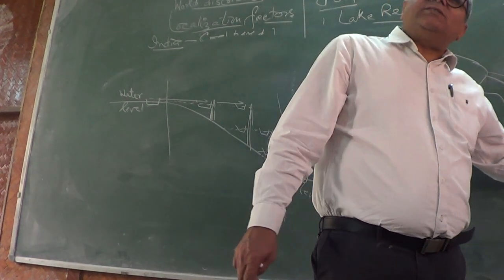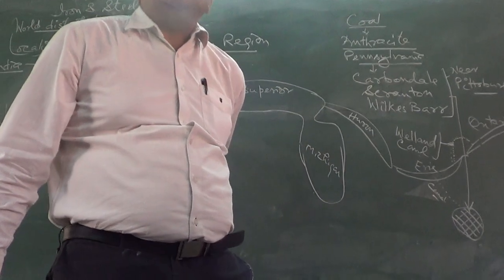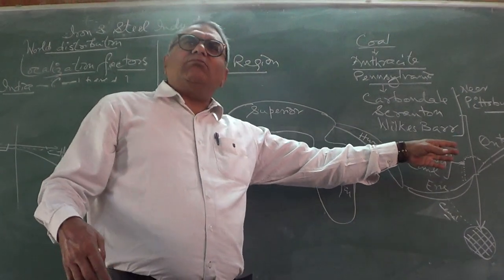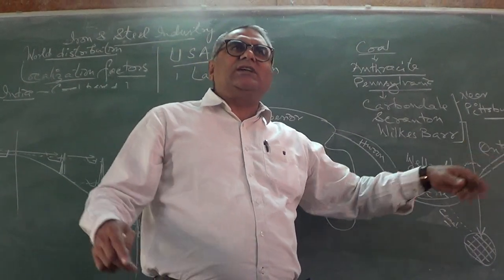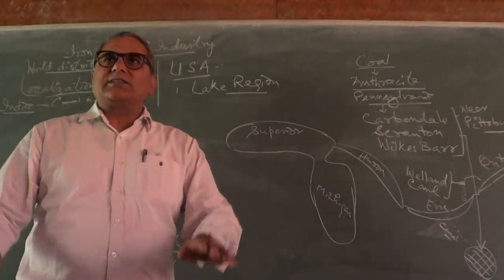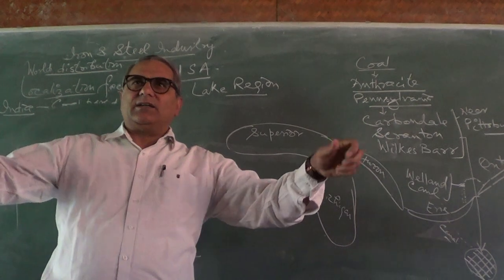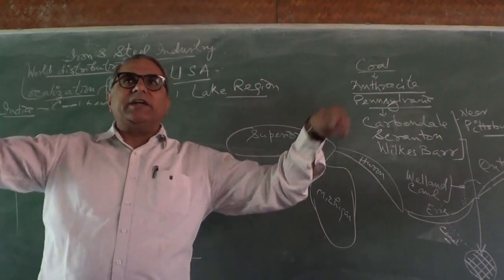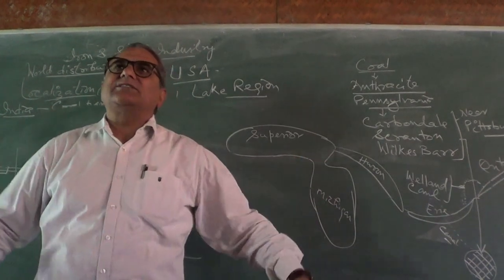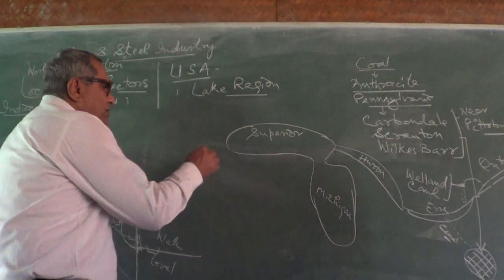This is called the lock system. The Welland Canal works as a lock system between Lake Ontario and Lake Erie, providing navigational facility. I have personally visited this area, and the lock system works like an escalator with handrails that also rotate — it is all mechanized.